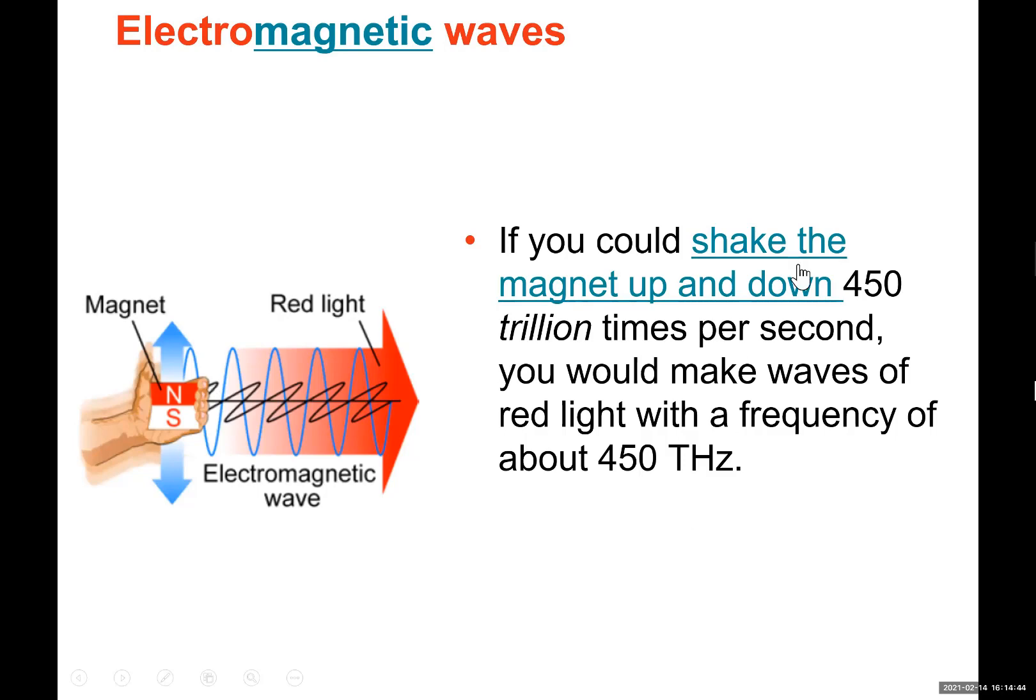If you move a magnet 450 trillion times per second, you're going to produce red light. We say light is made out of electromagnetic waves. As we oscillate the magnet, we're producing a magnetic field which is vibrating. Changing magnetic waves produce electrical waves, and electrical waves oscillate in a plane perpendicular to the plane of magnetic waves.